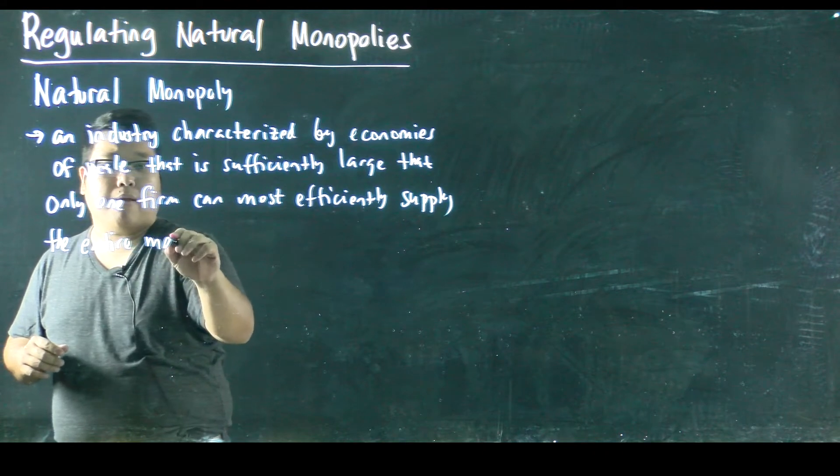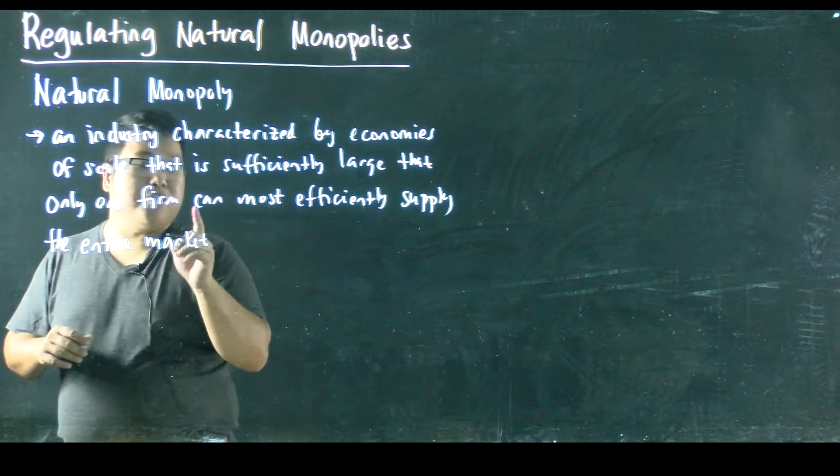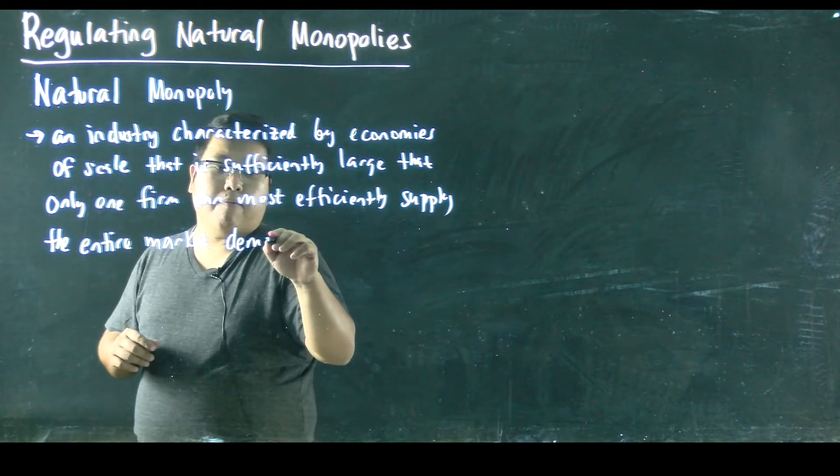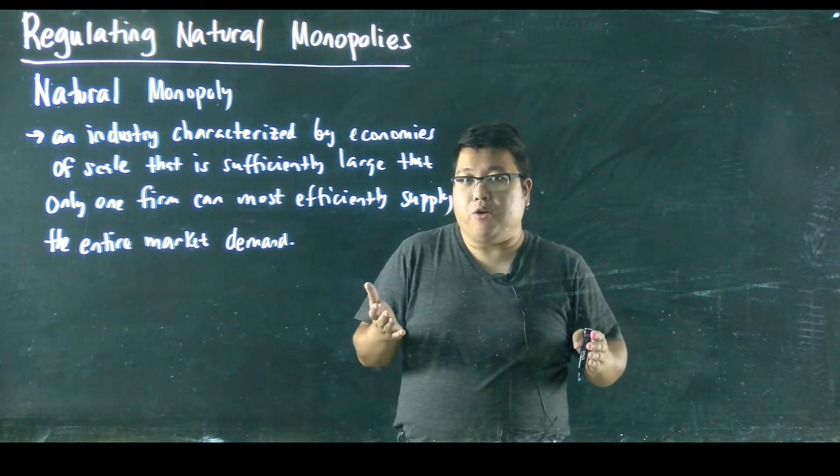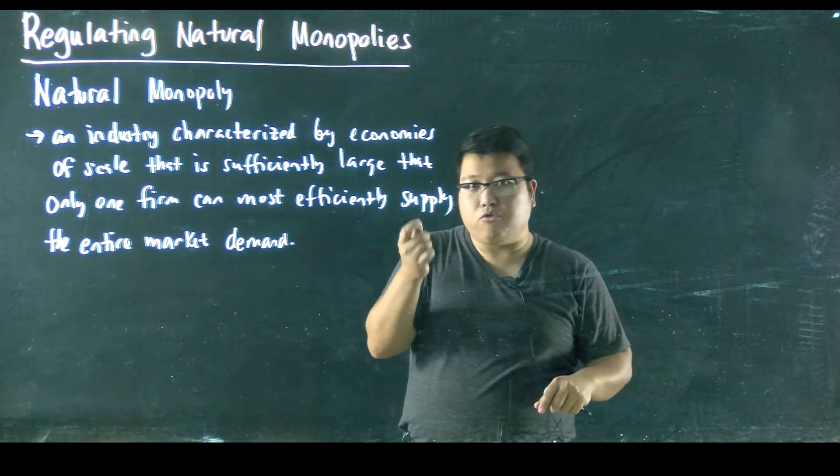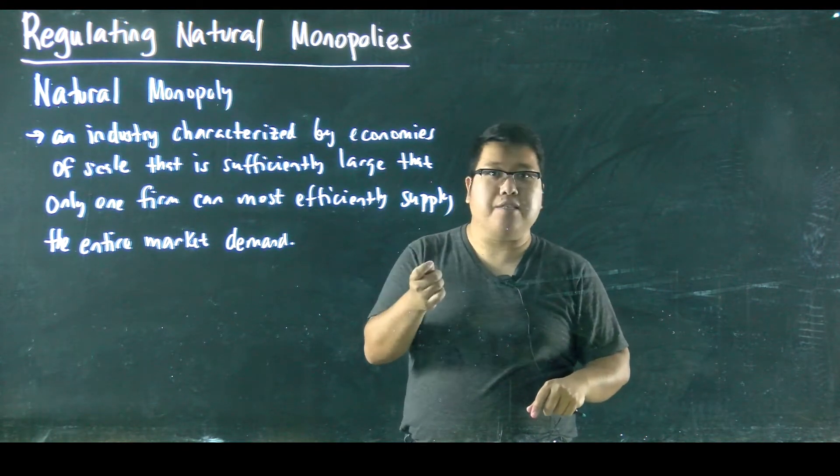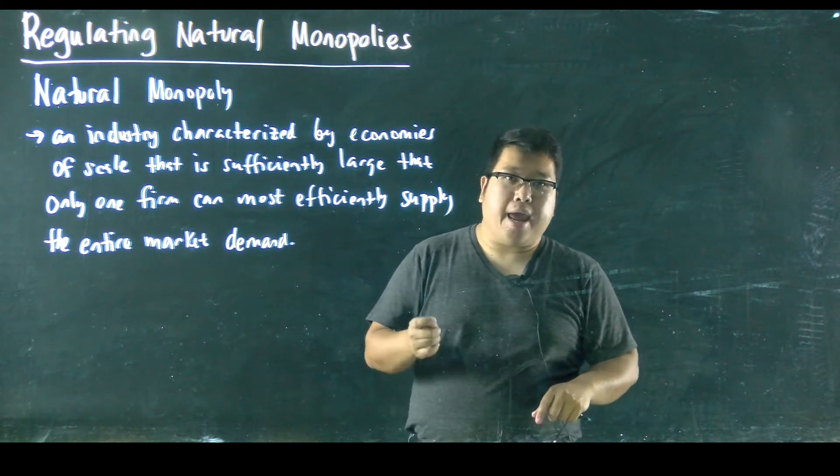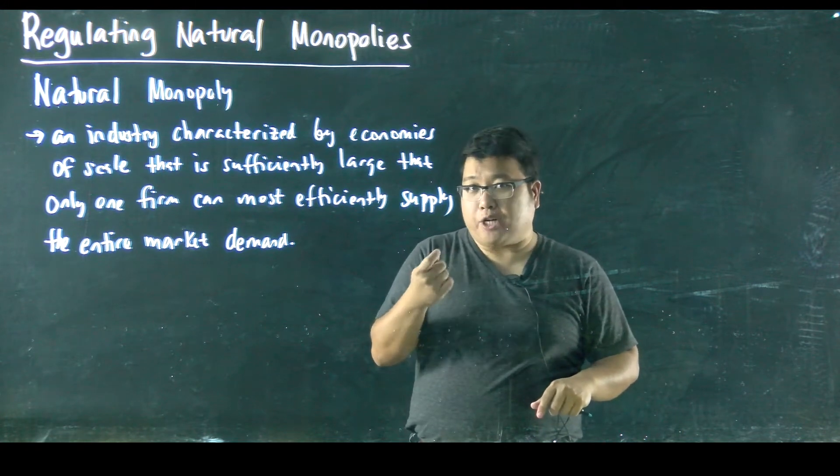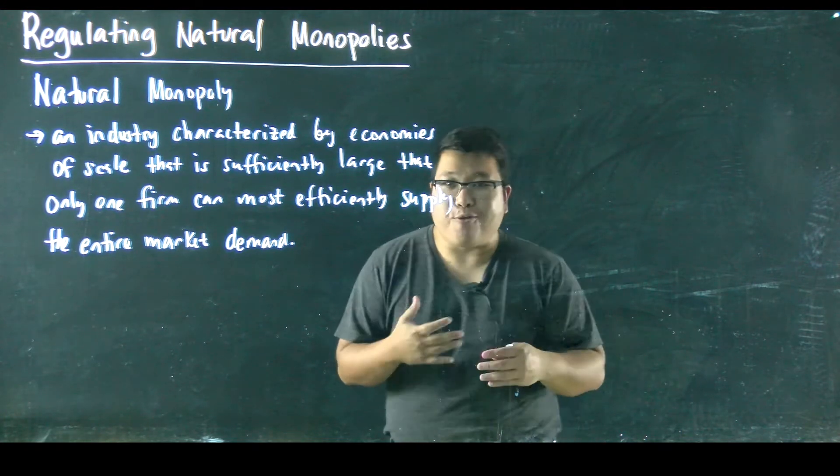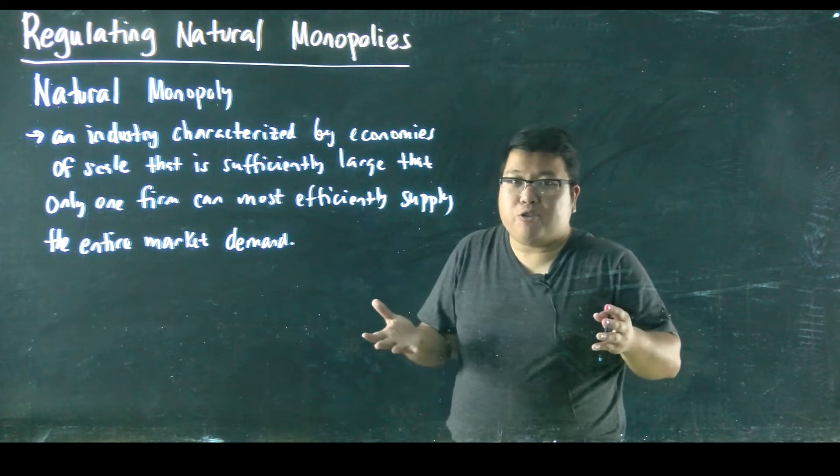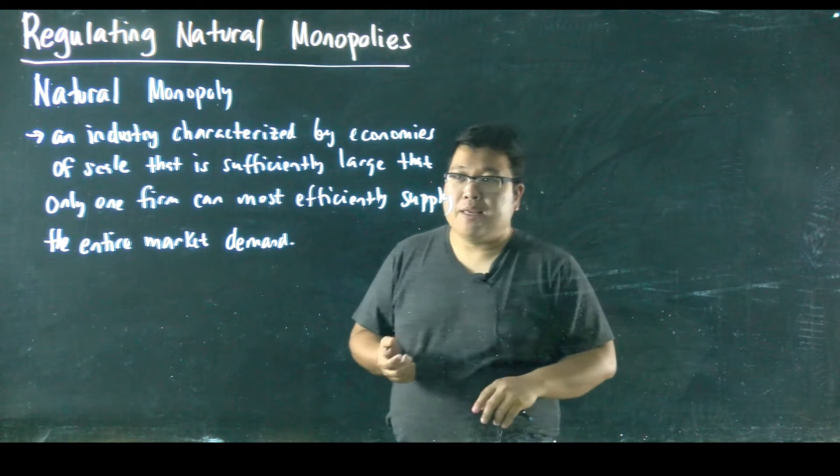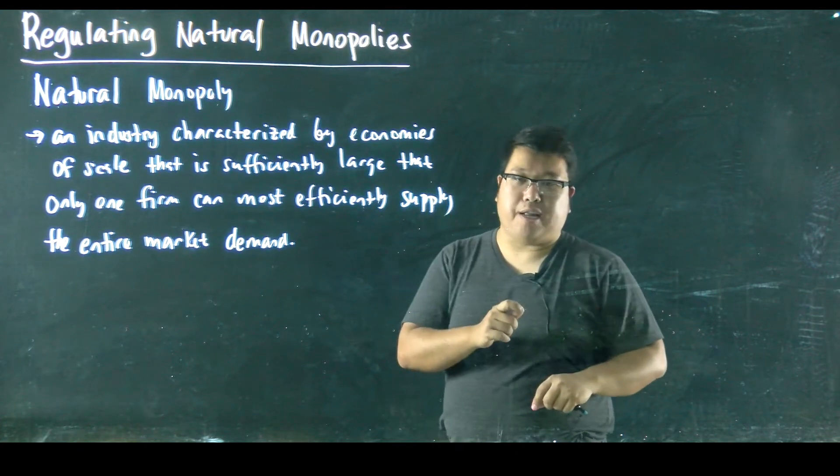Now, imagine yourself as a natural monopoly. There's only one firm producing the good or service, so now you have full control on the price that you want to set in that market. And if you're a natural monopoly, you will be tempted to raise your price so high because even if you raise your price so high, there's still people who's going to buy that good or service. There's still people who are going to purchase it. So that's where regulation is needed.